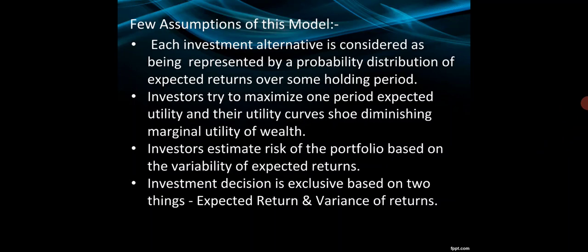The next assumption is that investors prefer higher return to lower return for a given level of risk. Whatever the level of risk, the investors will get a return on the basis of the risk taken by the investors. It is all about the explanation of Markowitz's model.